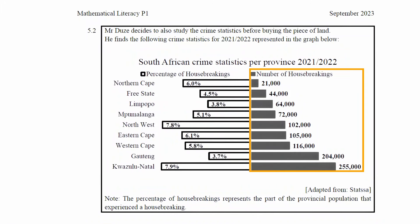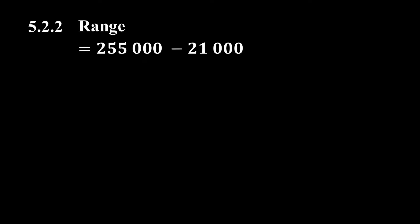The largest value in the number of house break-ins is 255,000 and the smallest value is 21,000. The difference between these two values is 234,000.